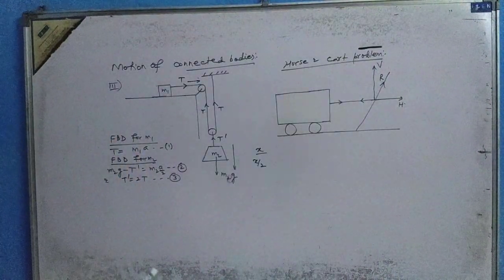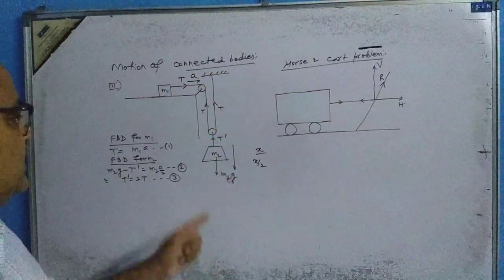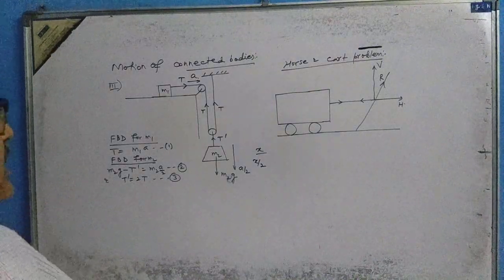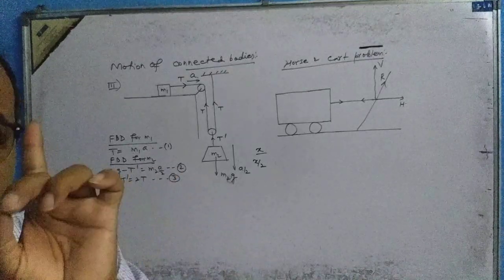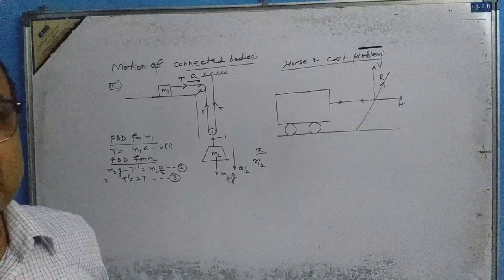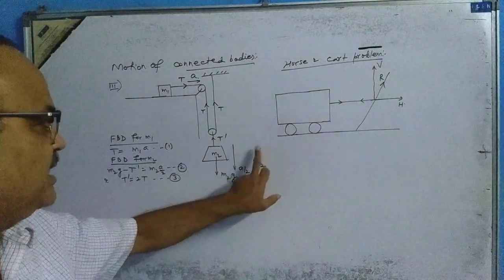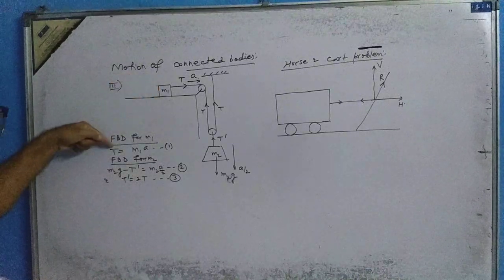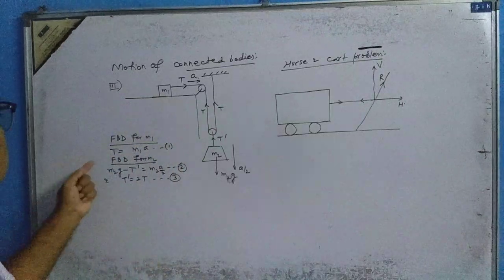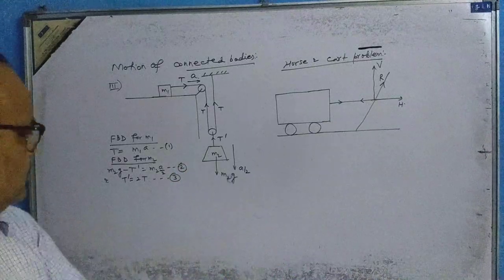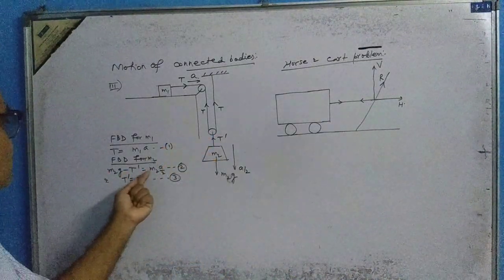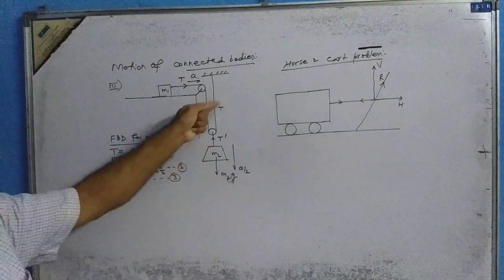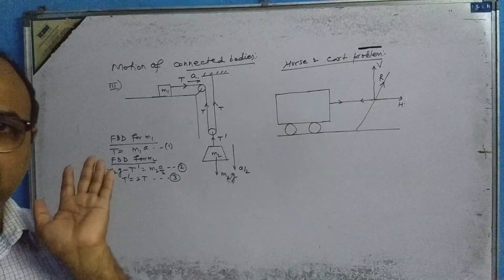This is why, if the acceleration of m1 is a, then the acceleration of m2 is a/2 — half of the previous. Keeping this in mind, we apply the FBD for m1: T = m1·a. For m2: m2·g − T' = m2·(a/2). One more equation is T' = 2T. These three equations will be used to solve the problem.